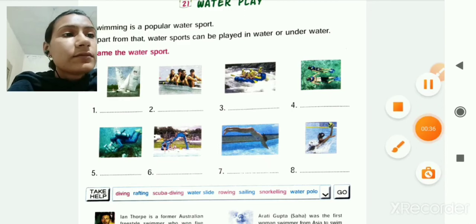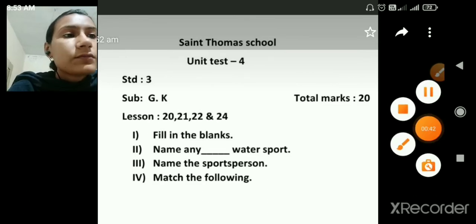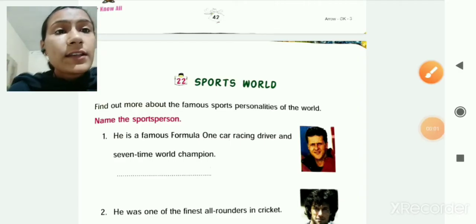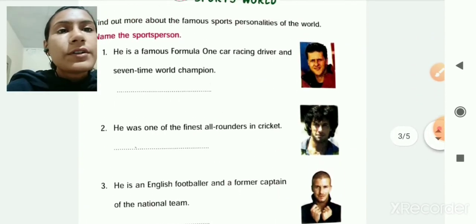Now let's see the next roman. So third roman is name the sports person from lesson number 22. So you can see here lesson number 22, sports world, name the sports person. So let's see.